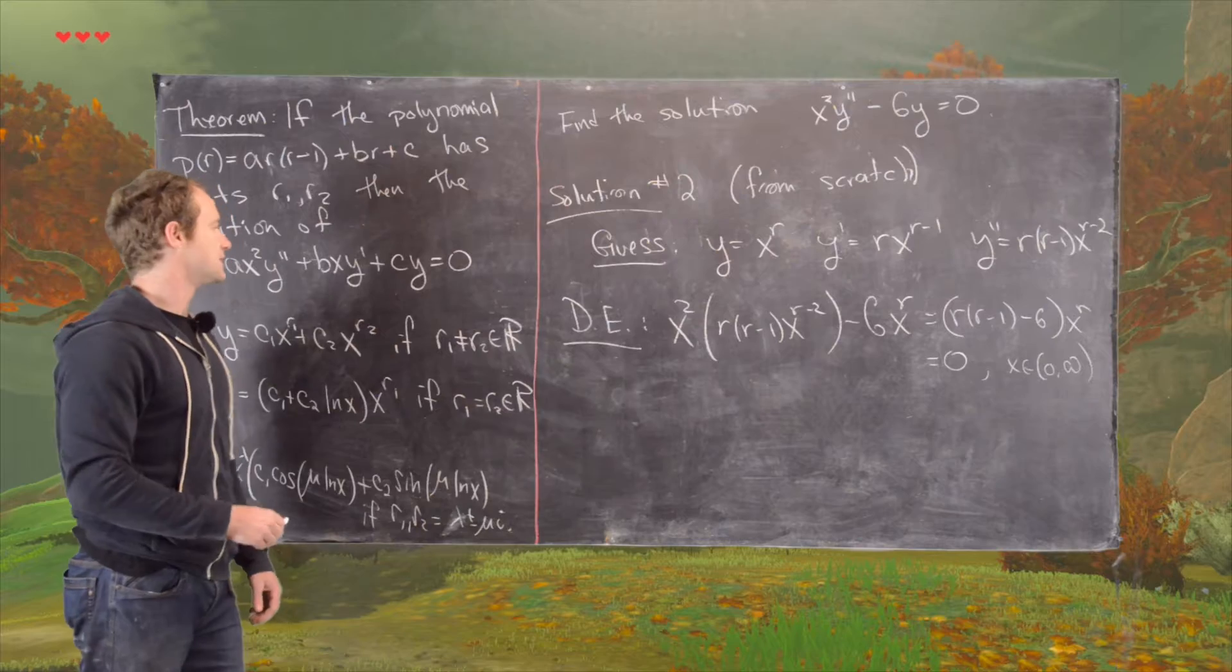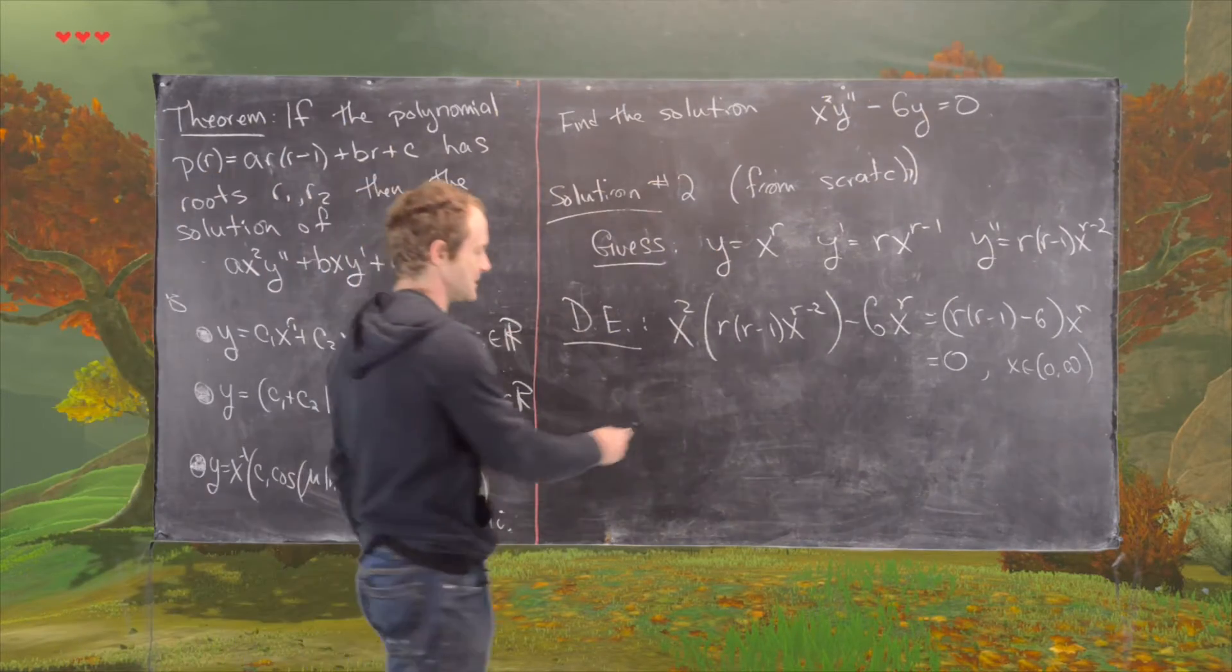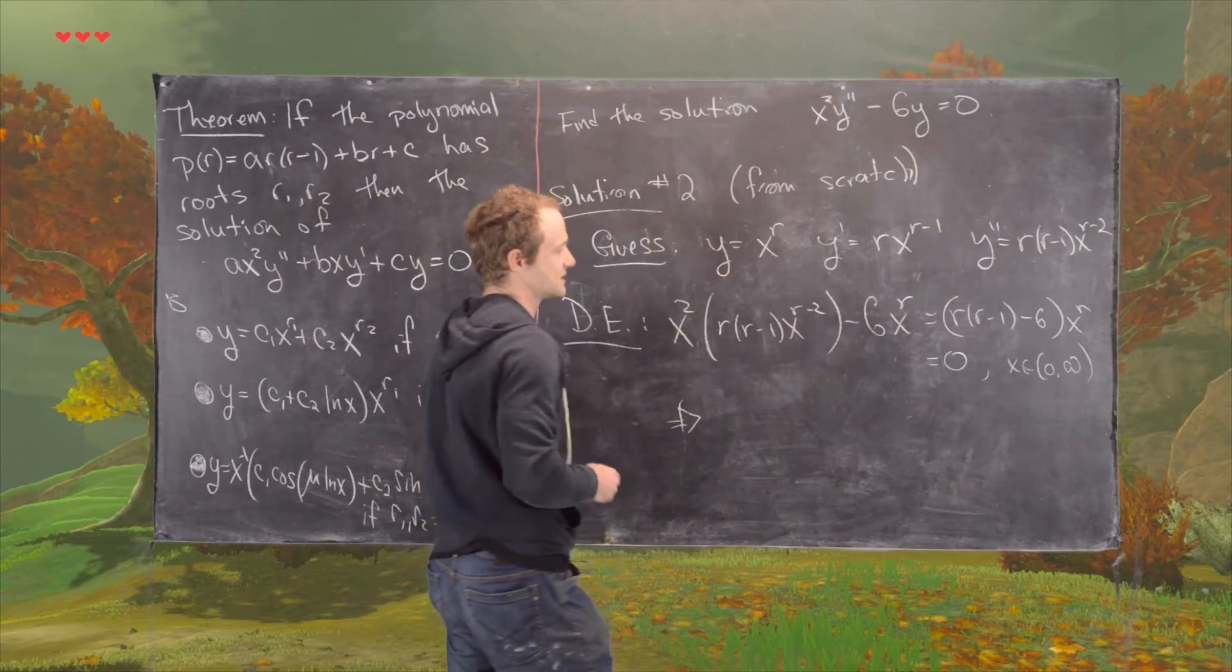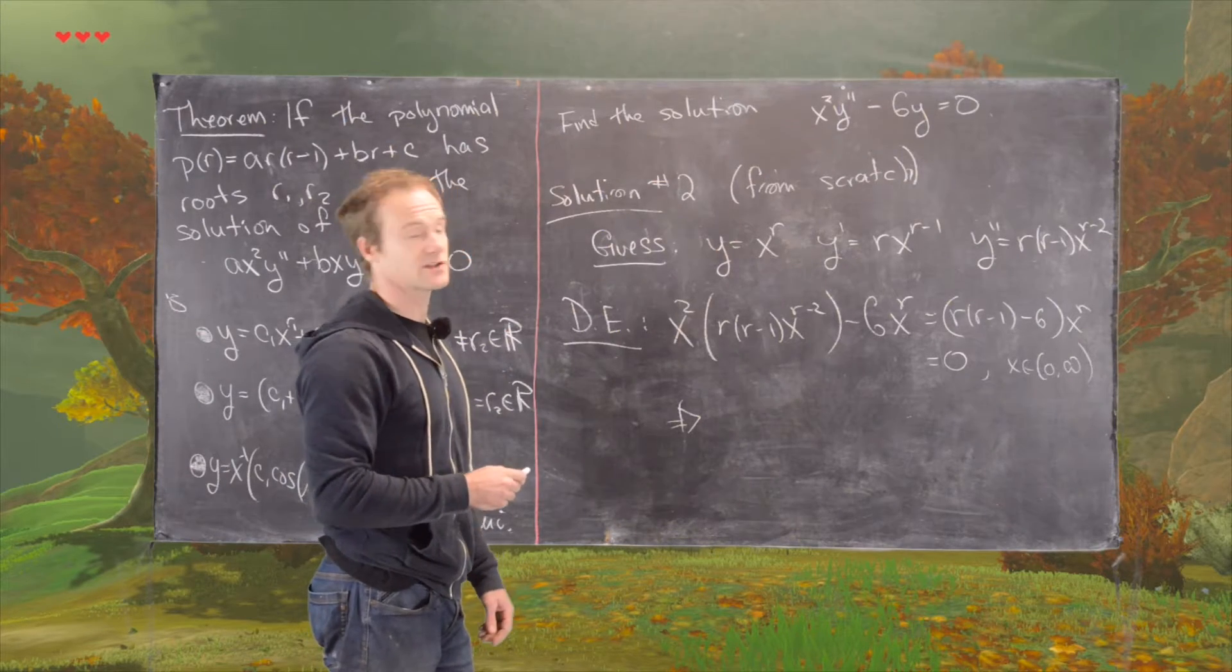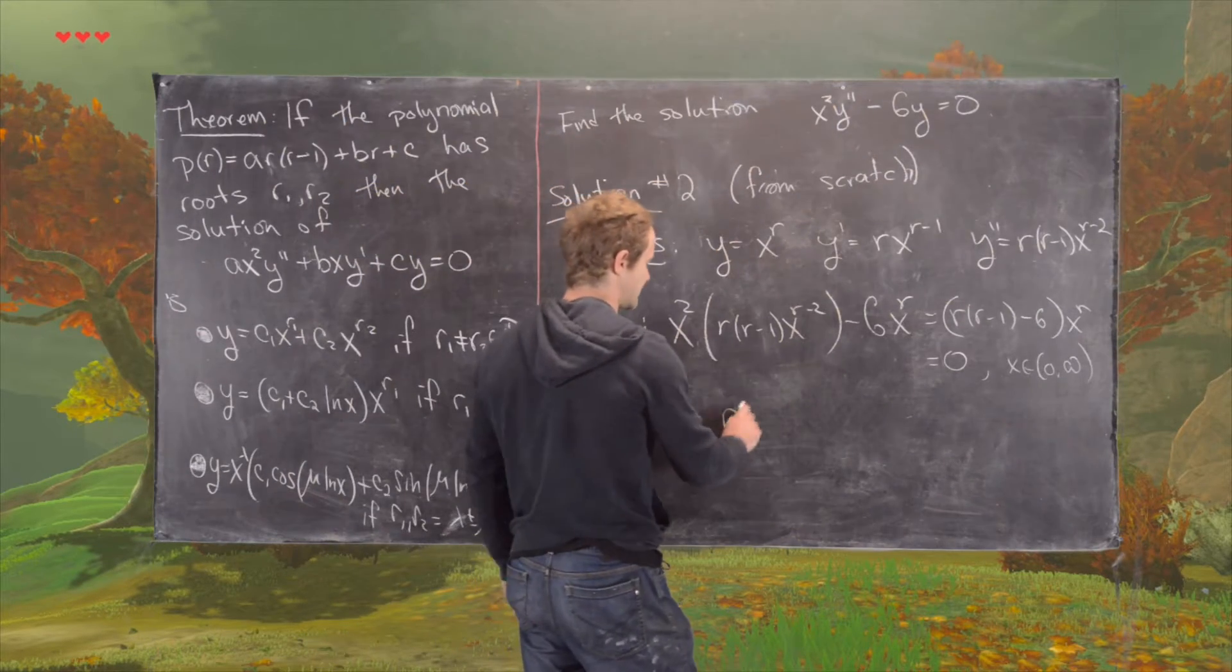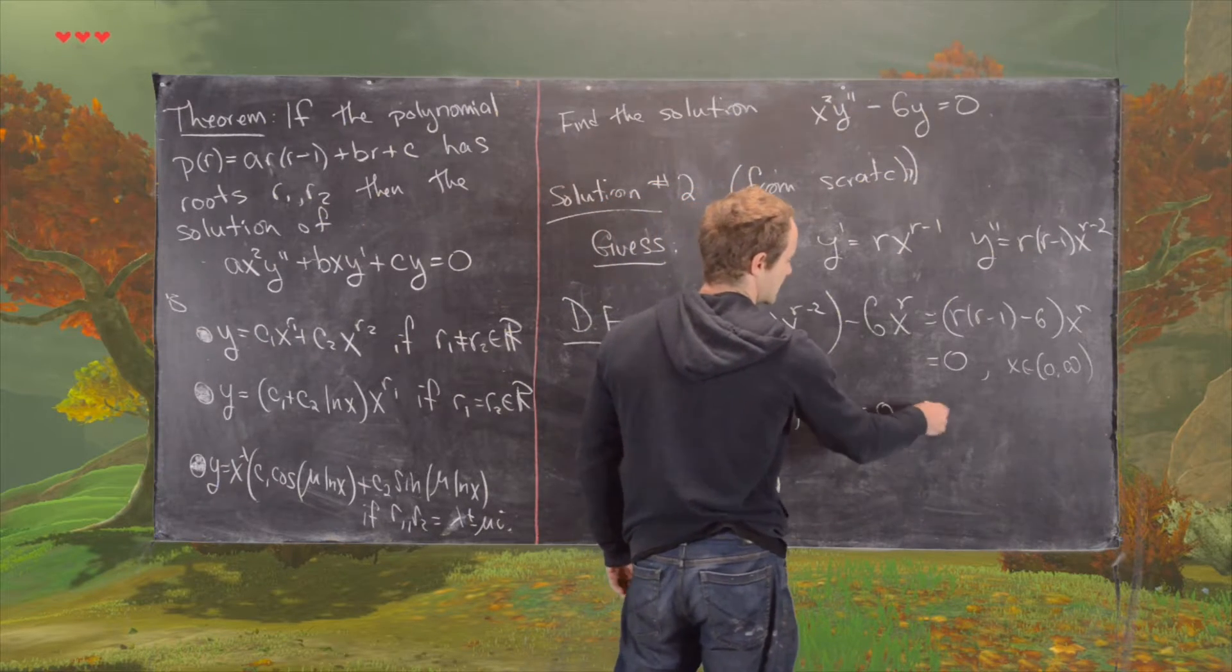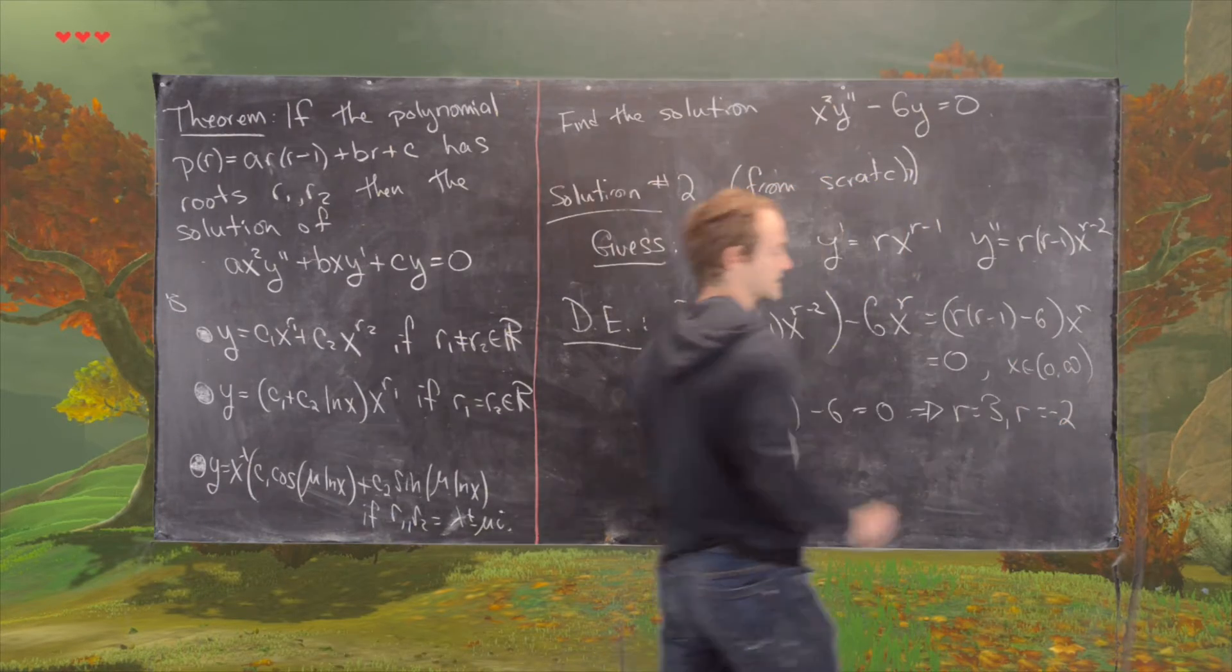And I should have said over here that this solution gives us a solution on that interval anyway. But now notice that gives us the following polynomial. So if x is between 0 and infinity, that means that x to the r is never 0, which tells us that we have this polynomial equals 0, but that has the same solutions that it had previously.